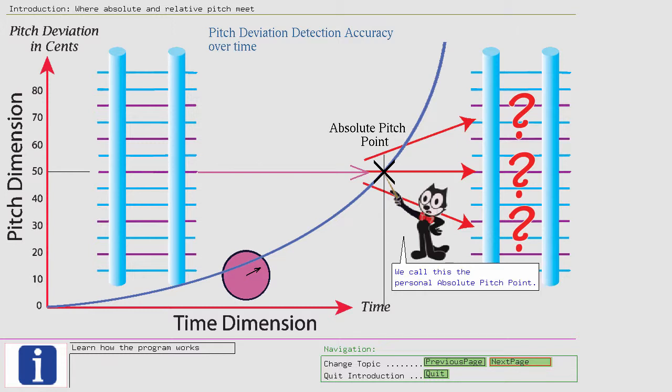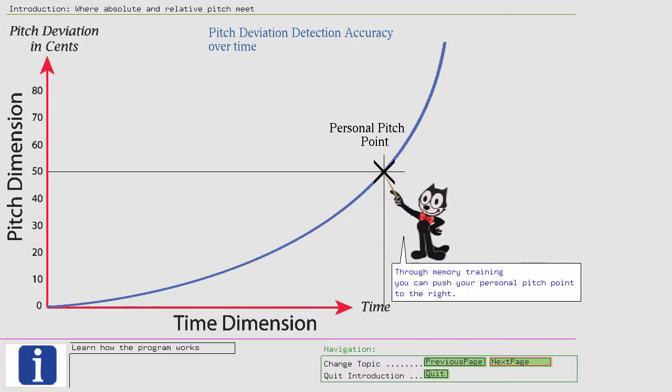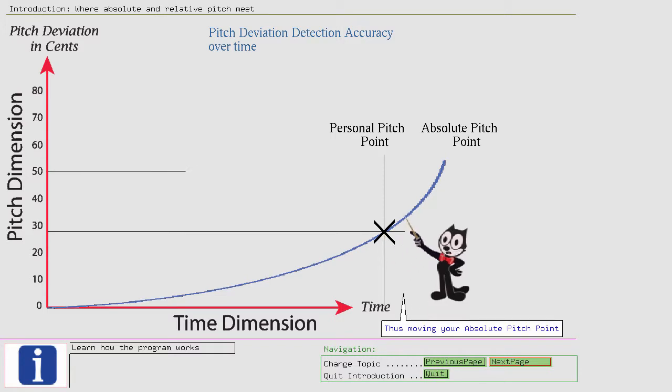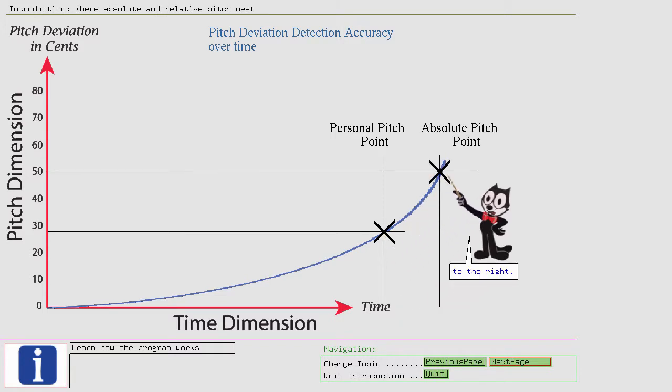We call this the personal absolute pitch point. Through memory training, you can push your personal pitch point to the right, and through your training, down to more accurate cent levels, thus moving your absolute pitch point to the right.